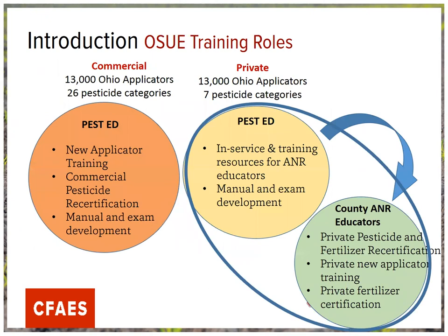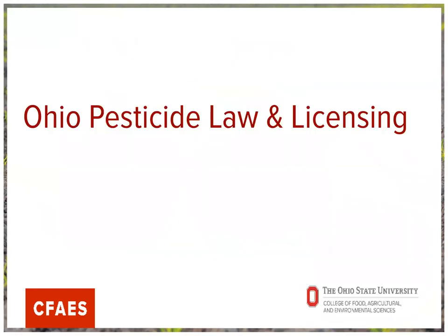Looking at what we do: my program does a lot of commercial pesticide applicator training — full day programs that train new applicators and recertify existing ones — as well as manual and exam development. On the private pesticide applicator side, we work with you in the counties to do certification training and provide materials through our pesticide in-service. On each side — commercial or private — we have almost 13,000 applicators. Commercial categories: 26. Private categories: 7. We'll talk more about those categories on the private side here in a bit.